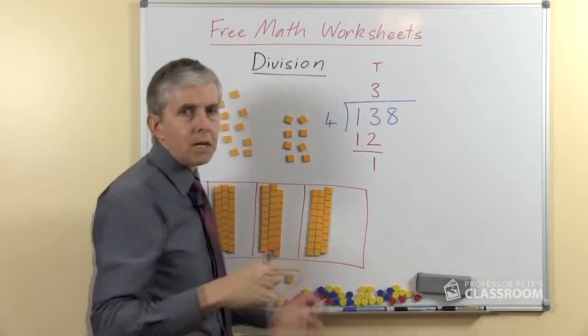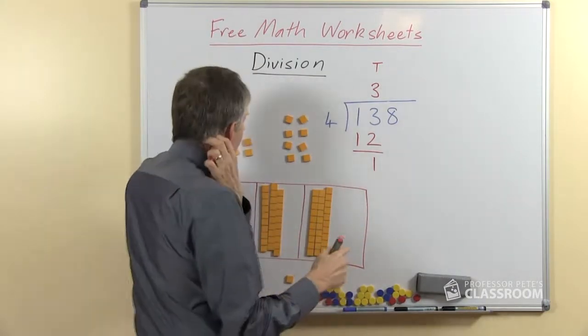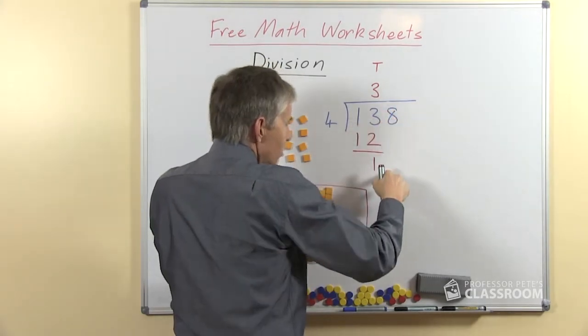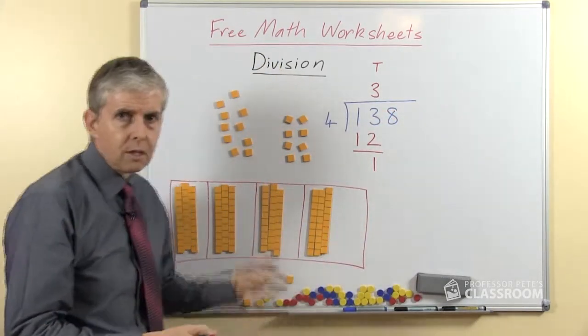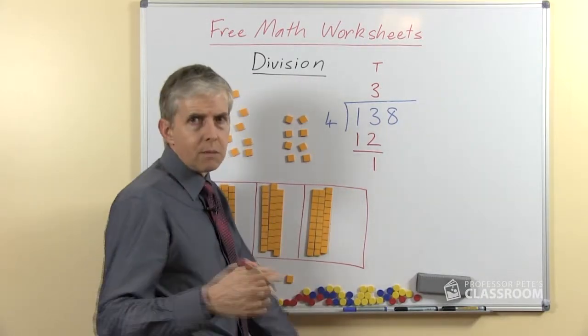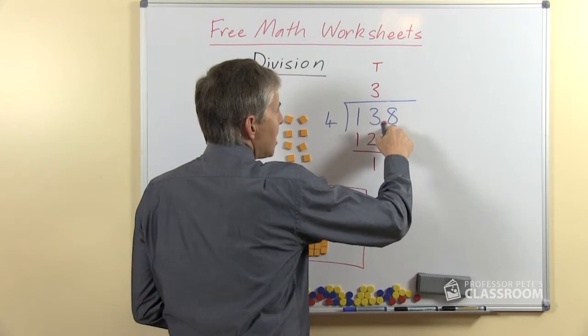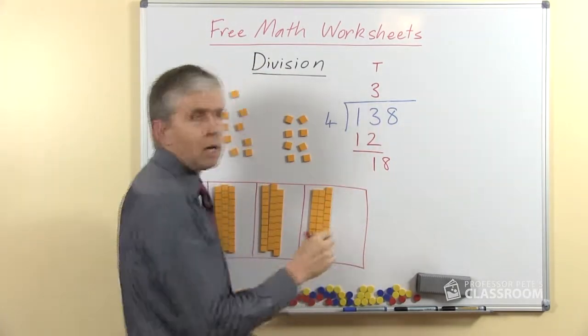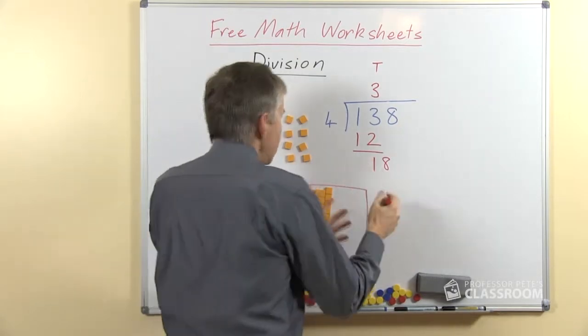Now this is where people say 'bring down the 8', and I used to say that as well. But it's not really about the symbol, it's not about moving the symbol, it's about how many ones do we have. So perhaps a better way of putting it, and I struggle, I have struggled to come up with a better way, but the best one I can come up with is say, write the 8 next to the 1 to show how many ones there are. There are 18 ones.